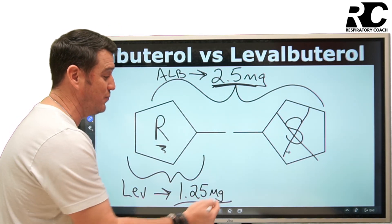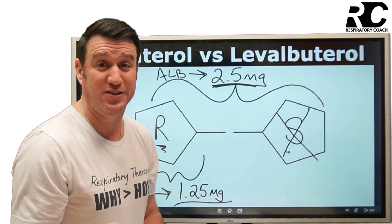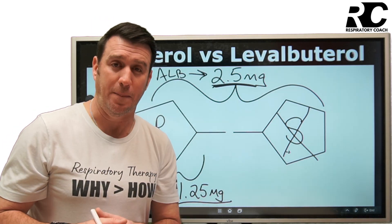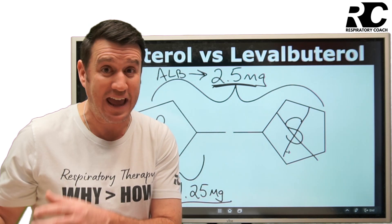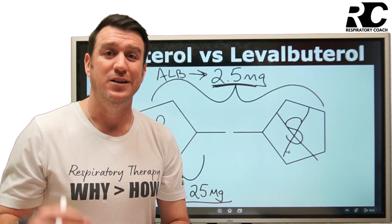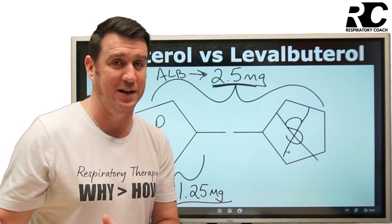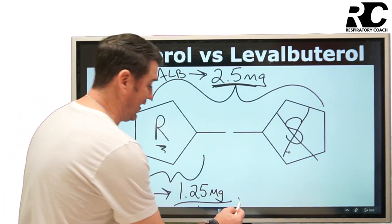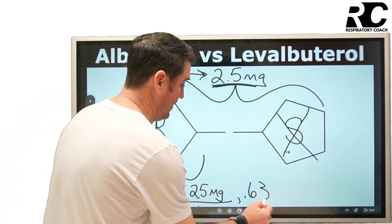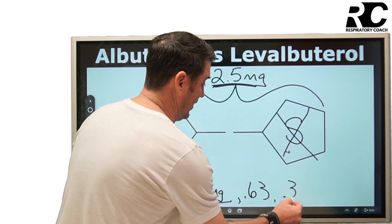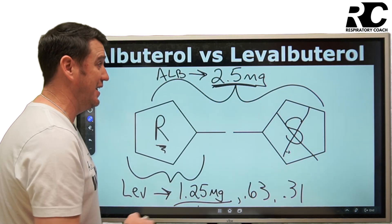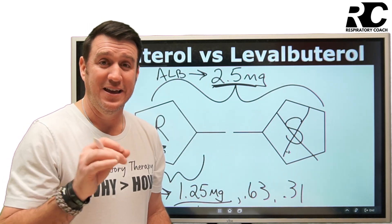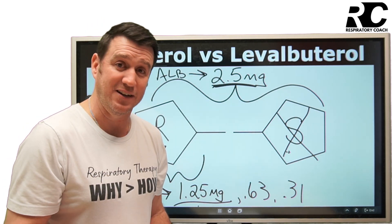You can cut the dose in half even more — down to 0.63 milligrams, and there's a dosage available at that level as well. There's also a pediatric dose of 0.31 milligrams. So your standard dosages for levalbuterol are 1.25, 0.63, and 0.31 milligrams. These bronchodilators are in the same classification — they are short-acting beta-2 agonists.